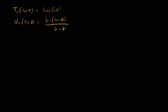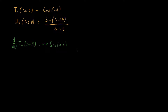We'd like to solve for the derivatives of our Chebyshev polynomials with respect to x, where x = cosθ. Let's start with something we know: d/dθ of T_n(cosθ) is just the same as the derivative of cos(nθ). The derivative of cosine is minus sine, so we get minus n·sin(nθ). That's our starting point.